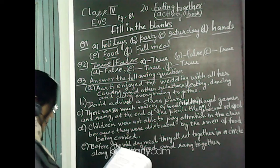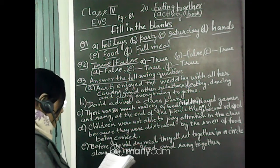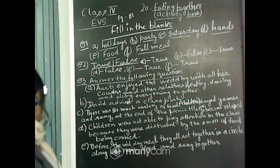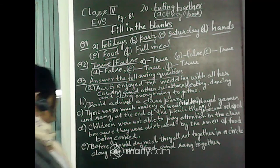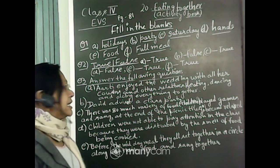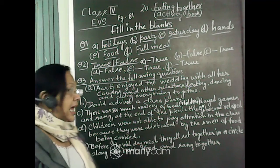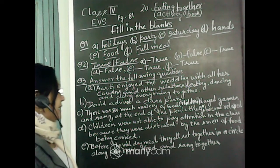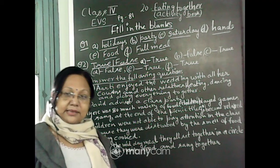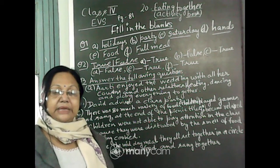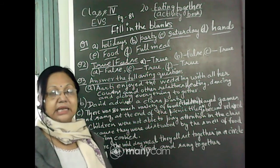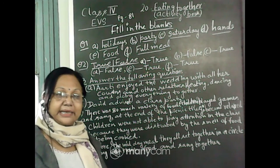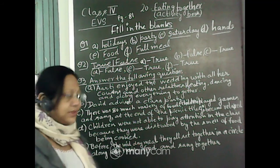Question C: how did the children enjoy their party? The answer is — there was so much variety of food, children played games and sang. At the end of the picnic they all became relaxed. Everything is for our mind's relaxation, so they enjoyed the party as all of them became relaxed.